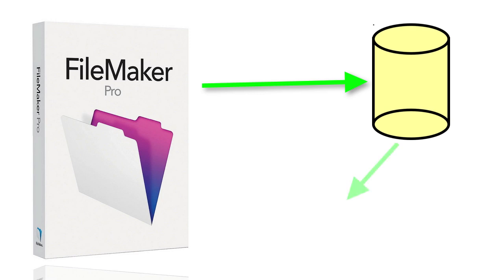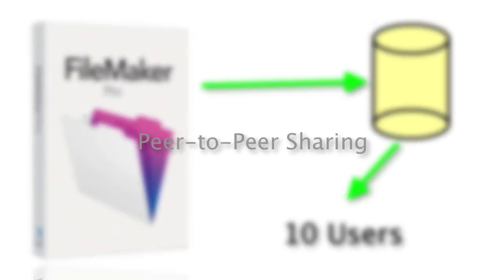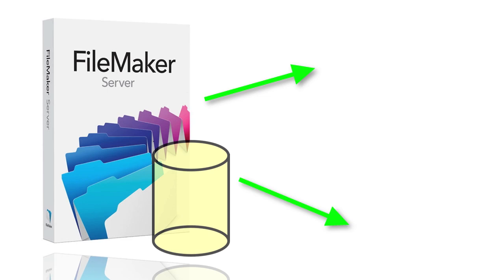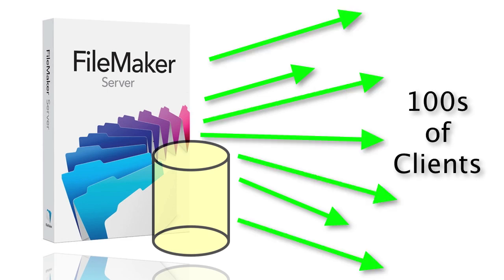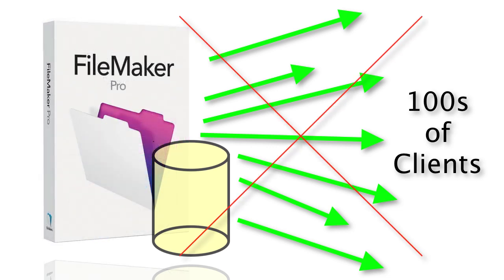FileMaker Pro can share a database that it opens itself with up to 10 other users — this is called peer-to-peer sharing. This is fine if you just want to test a database, but the problem is that people want to use this as their FileMaker Server. They're cheaping out and not investing in the server they should have. They assume they have the same level of protection and robustness — that is false. It's a bad idea. They have no automatic backups, no real protection, and if there are any problems between clients and that copy of FileMaker Pro, they're going to crash the whole database system. FileMaker Server is designed to interact with dozens and up to hundreds of clients simultaneously — FileMaker Pro cannot do that.